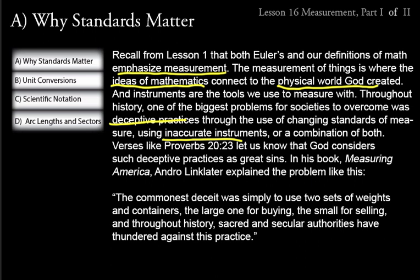Verses like Proverbs 20:23 let us know that God considers such deceptive practices as great sins. In his book Measuring America, Andre Linkletter explained the problem like this: the commonest deceit was simply to use two sets of weights and containers — the large one for buying and the small one for selling. Throughout history, both sacred and secular authorities have thundered against this practice.